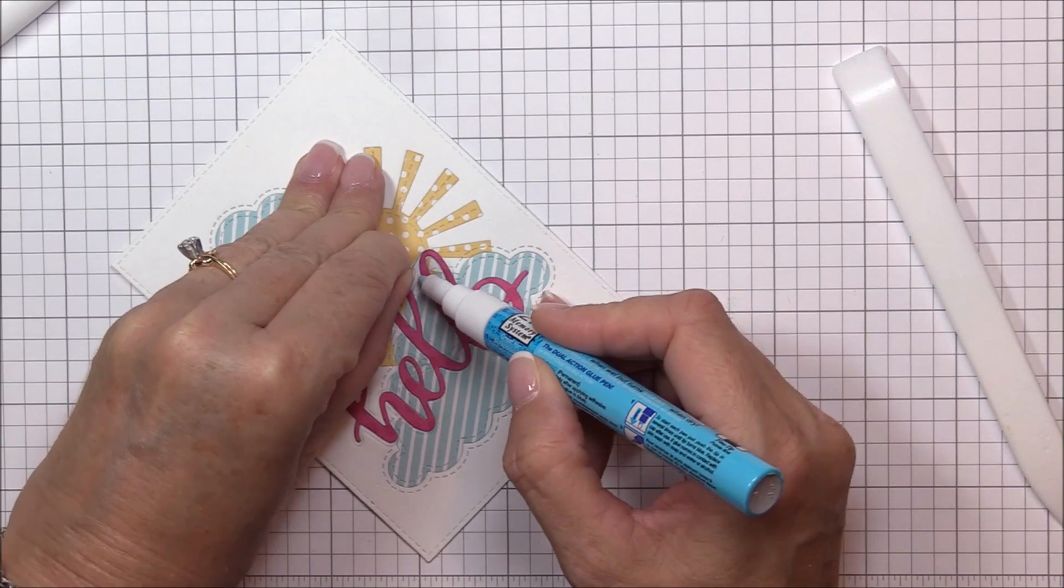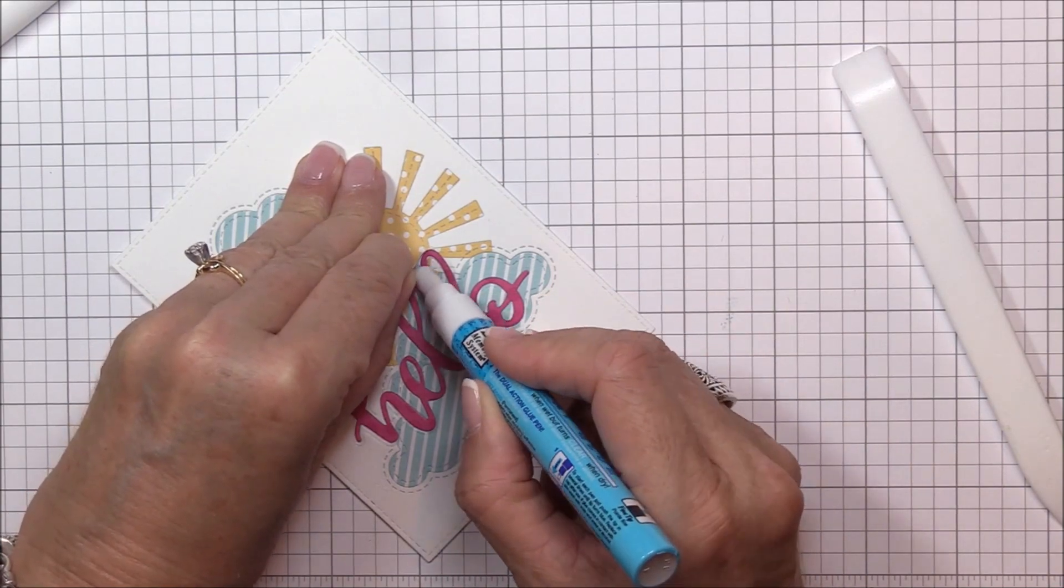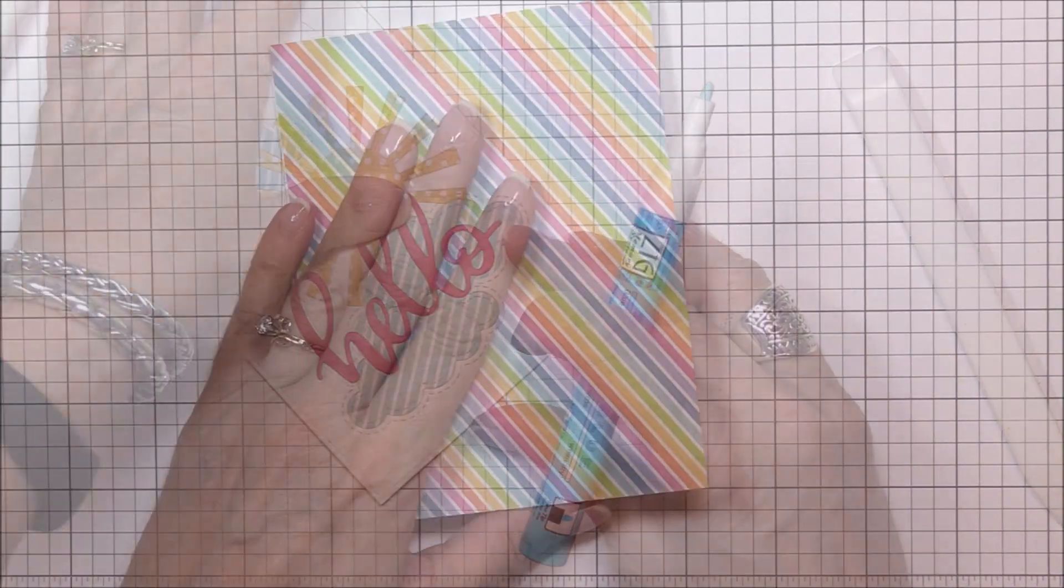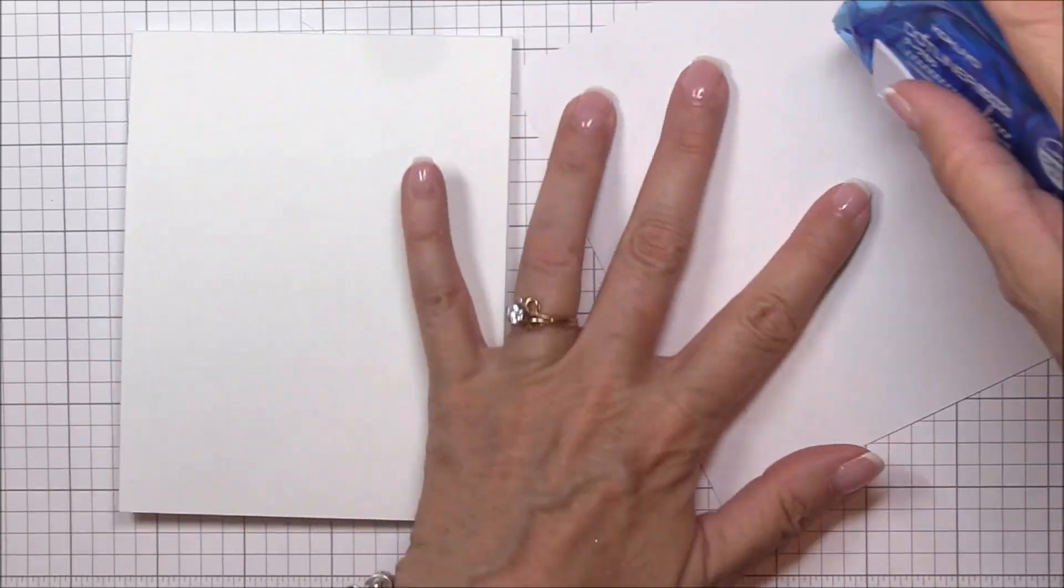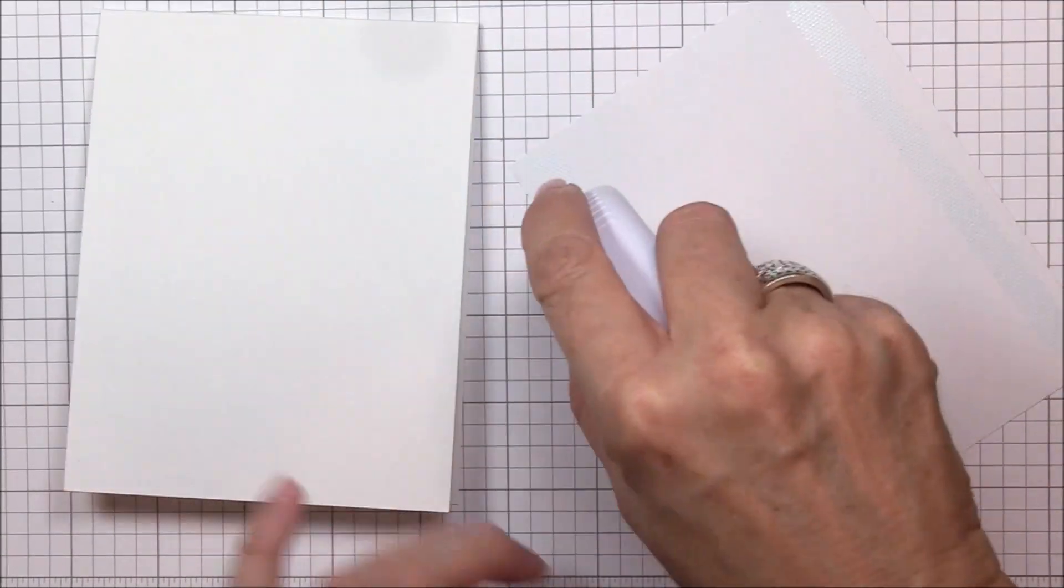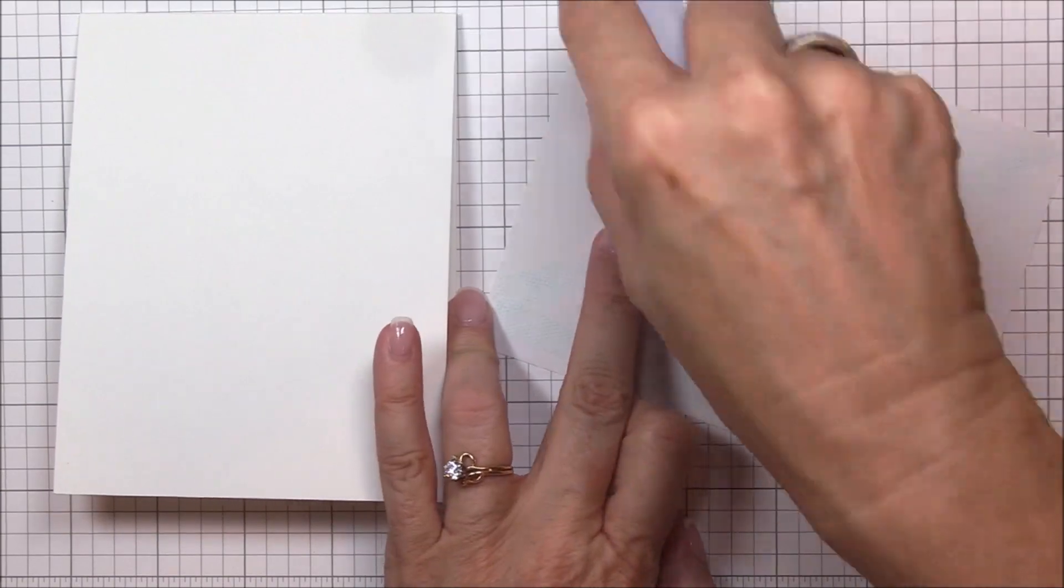While I was using my Teflon bone folder to burnish the die cuts, I noticed that there was one area of the sunshine that didn't completely adhere to the printer paper. So I just added a bit of liquid adhesive to the back of that die cut to make sure it's solidly adhered.